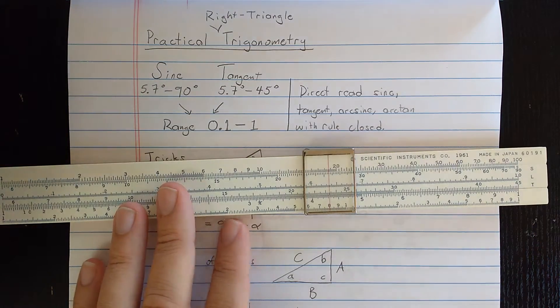In other words, it has this S and T scale, which are for trigonometry. The S scale runs from about 5.7 degrees to 90 degrees, and sines in that range go from 0.1 to 1, where sine of 90 degrees is 1. Tangent is read on the T scale from about the same point, 5.7 degrees to 45 degrees on the right end, where it is also 1.